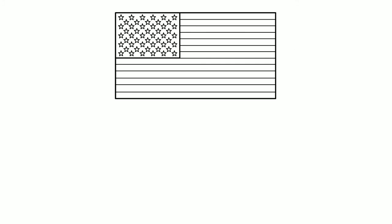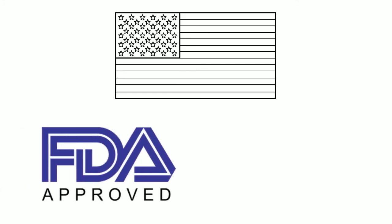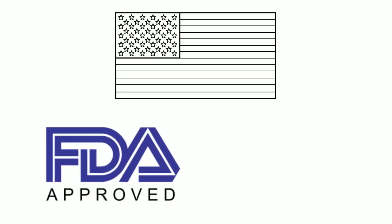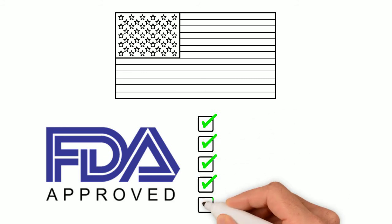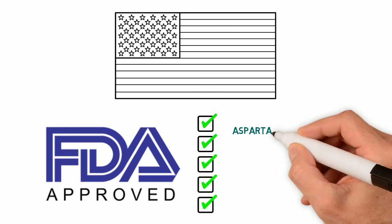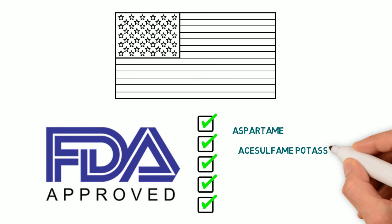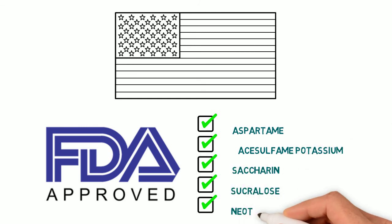In the United States, there are five artificial sweeteners recognized by the FDA to replace sugar. They are listed in order of their level of sweetness: aspartame, acesulfame potassium, saccharin, sucralose, and neotame.